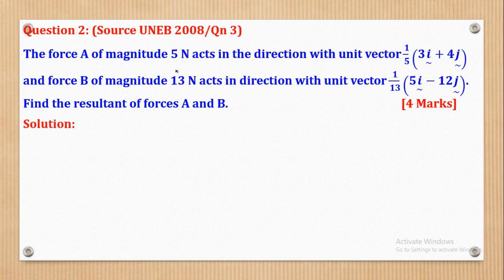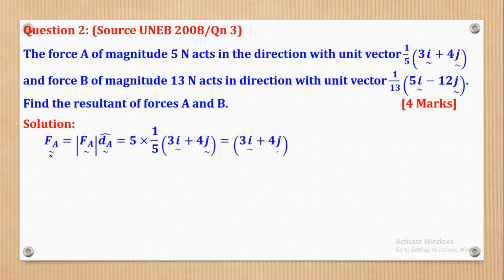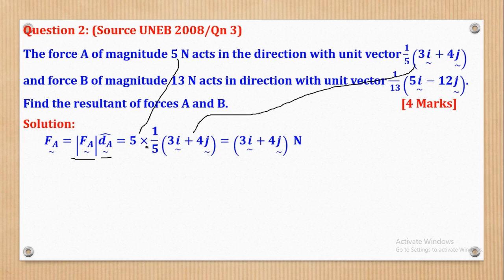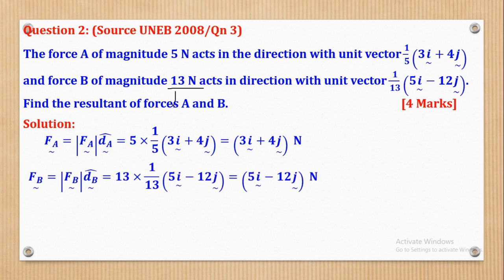Here we are given the magnitude and the unit vector or direction of each force. To get force A in vector form, we multiply the magnitude by the unit vector. Magnitude of force A is 5, multiplied by (1/5)(3i + 4j), giving 3i + 4j Newtons. For force B, the magnitude is 13 multiplied by (1/13)(5i − 12j), giving 5i − 12j Newtons.